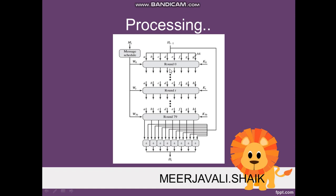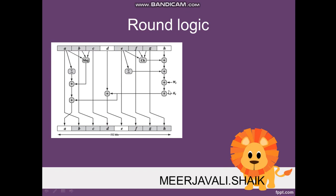After applying the computation in each round logic, we get some result which is stored in the eight registers, and that output is given as input to the next round. After all 80 rounds complete, the final result obtained from round 79 is added with the initial hash buffer to generate the fixed hash value. This completes the processing stage.